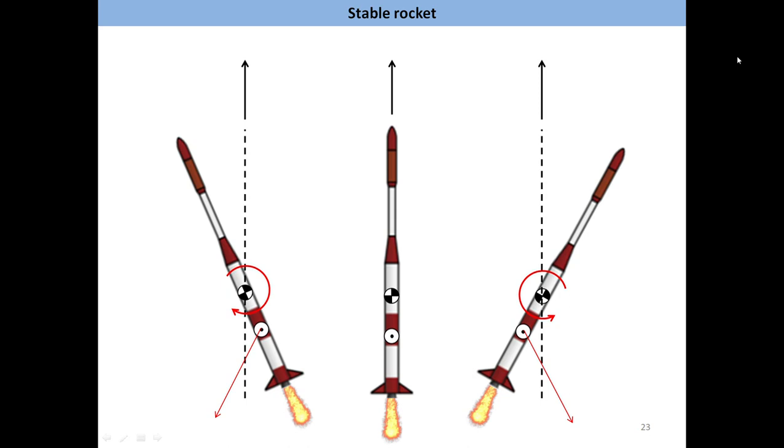On the other hand, if the center of pressure is behind the center of gravity, any disturbance of the rocket's body from its direction of movement leads to aerodynamic forces that cause a torque which tends to rotate the rocket back towards its direction of movement. In this case, when there are small disturbances, the rocket will be able to rotate back to its direction of movement automatically.